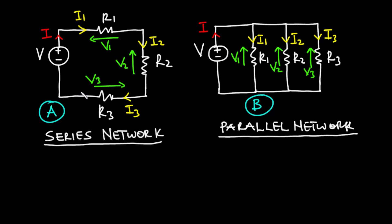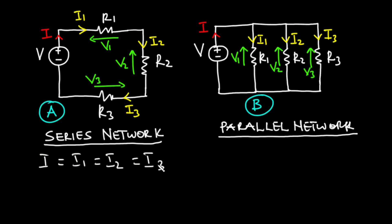For resistors to be in series with each other, there should be no node or junction between them. And since there is no node or junction between the resistors, the same current is free to move from the positive terminal of the voltage source through the resistors and then back to the negative terminal. Thus, I is equal to I1 is equal to I2 is equal to I3. In that case, I, which is the total current, is the same as I1, I2, and I3, which are the currents flowing through R1, R2, and R3 respectively.